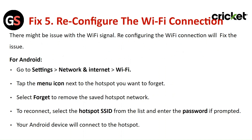Fix five: Reconfigure the Wi-Fi connection. There might be an issue with the Wi-Fi signal — reconfiguring the Wi-Fi connection will fix the issue. For Android, go to Settings, then Network and Internet, then Wi-Fi. Tap on the menu icon next to the hotspot you want to forget and select 'Forget' to remove it. To reconnect, select the hotspot SSID from the list and enter the password if prompted — your Android device will connect to the hotspot.